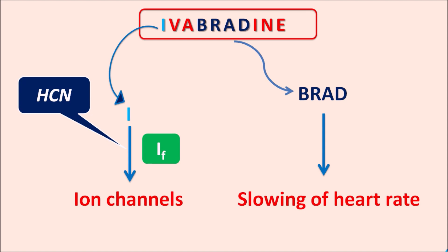HCN indicates hyperpolarization-activated cyclic nucleotide-gated ion channels. So these ion channels are blocked by Ivabradine. Ivabradine is an ion channel blocker and it produces bradycardia, thereby it is useful in the treatment of stable chronic heart failure.